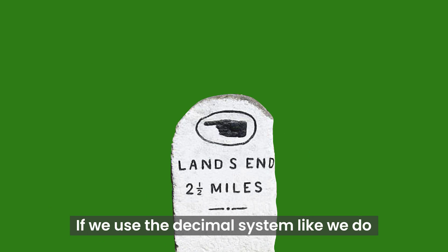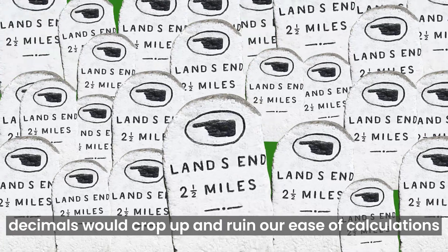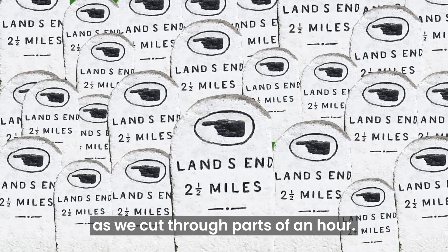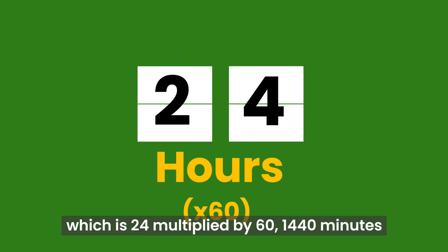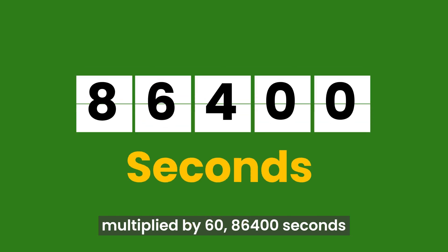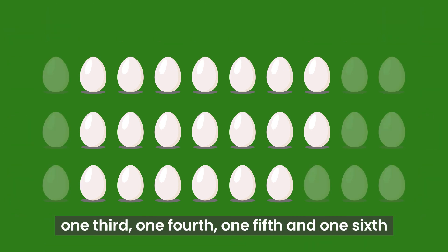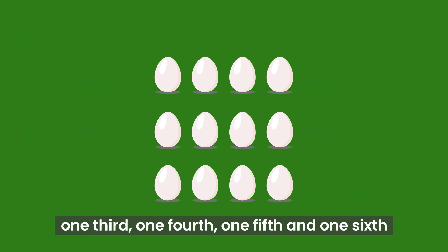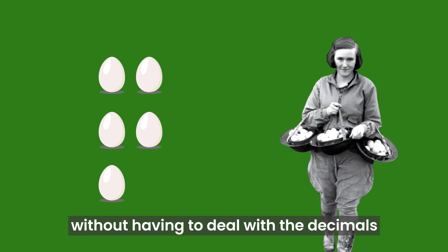If we use the decimal system like we do while measuring distances, decimals would crop up and ruin our ease of calculations as we cut through parts of an hour. Our current convention, however, gives us a very convenient way of handling time. One day is 24 hours, which is 24 multiplied by 60 — 1,440 minutes — multiplied by 60 again — 86,400 seconds. We can understand one-half, one-third, one-fourth, one-fifth, and one-sixth of parts of time extremely easily without dealing with decimals.